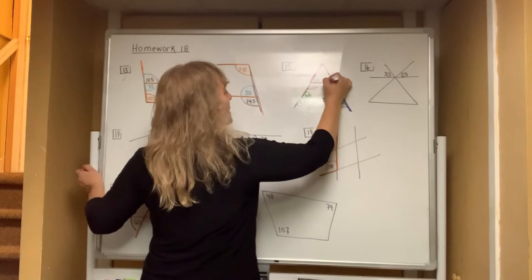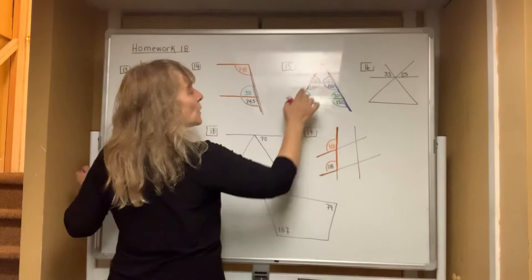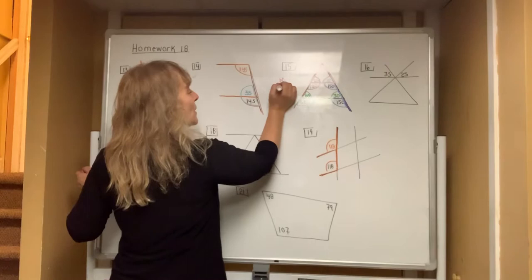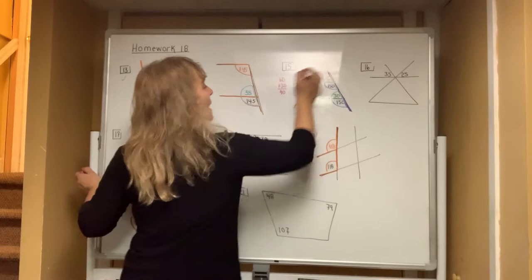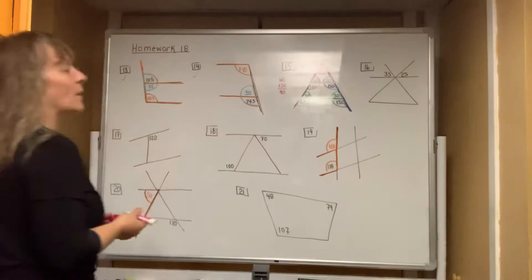The only thing missing is a small triangle at the top. The three angles of every triangle always add up to 180. So if you add 60 plus 30, you get 90, and you need 90 more degrees on top to reach 180. You've finished figuring out all the angles in number 15.